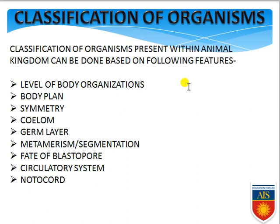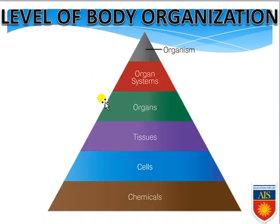As we studied in Plant Kingdom, we categorized plants based on specific features. Here also in Animal Kingdom we will be categorizing animals based on specific features. The features are: level of body organization, body plan, symmetry, coelom, germ layer, metamerism or segmentation, fate of blastopore, circulatory system, and notochord. Based on all these features we are classifying organisms.